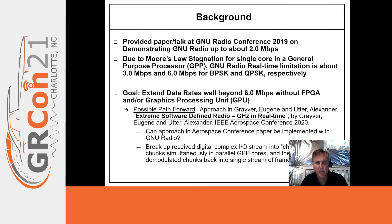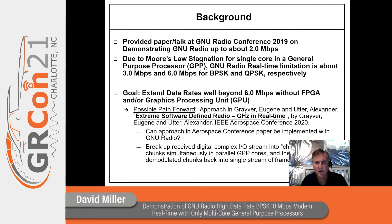A little background. I provided a paper and talk at a previous GNU Radio Conference on operating GNU Radio up to about 2.0 megabits per second. The Moore's law stagnation for a single core over the last 10 years or so really limits the data rates one can achieve with GNU Radio to about 3 megabits per second and 6 megabits per second for BPSK and QPSK respectively.